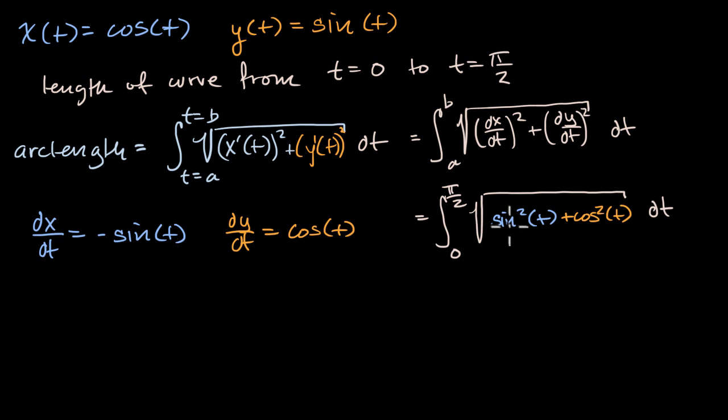Now, lucky for us, sine squared plus cosine squared of some variable is always going to be equal to one. So that's one of our most basic trig identities. Comes straight out of the unit circle definition of sine and cosine. And so we have the square root of one, the principal root of one, which is just going to be one. So all of this thing has just simplified to the integral from zero to pi over two dt.